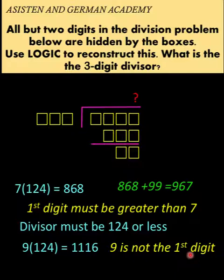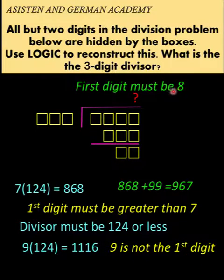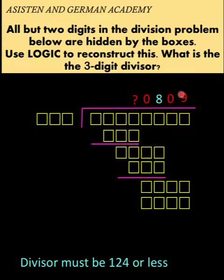The first digit must be 8. And so going back to our original problem, we now know that this question mark is equal to 8, and the quotient is 80,809.